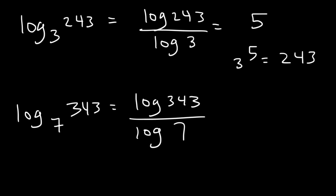Next we have log of 343 divided by log 7. And this is equal to 3.